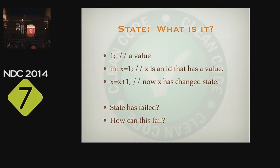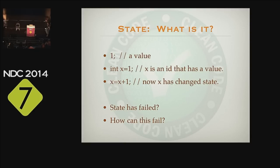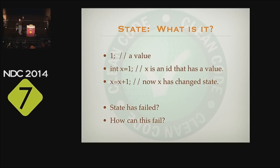Briefly: one is a value. The next line says that x is an identity — an identifier. In this case, that identifier identifies the value one. The next line, however, is problematic, because it suddenly says that the identifier will identify a value but you've got no idea what that value is. The identifier has a state, not a value. And that state can change. The subject of this talk is that state has failed — but how can this fail? A statement like this is so common in our programs, how can we call this a failure?